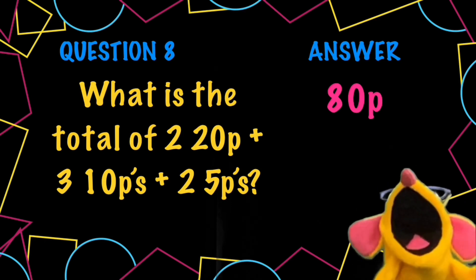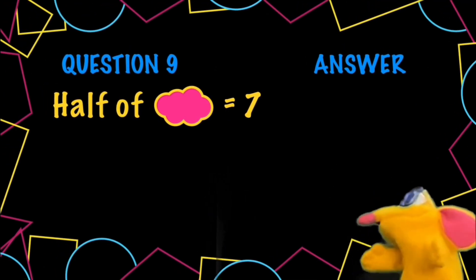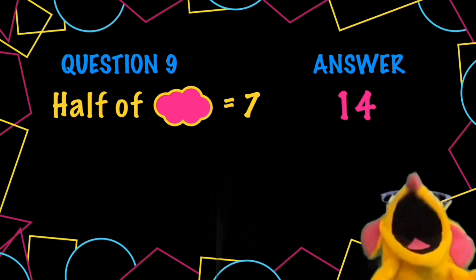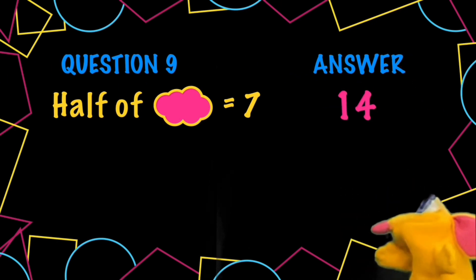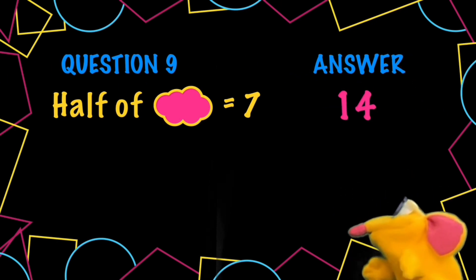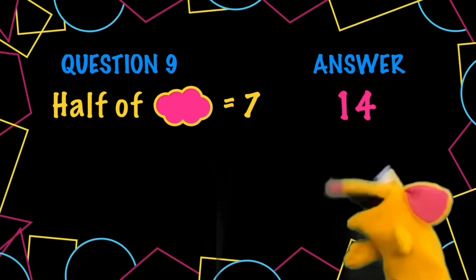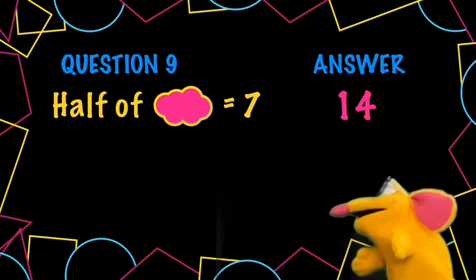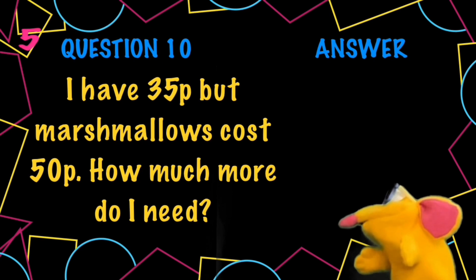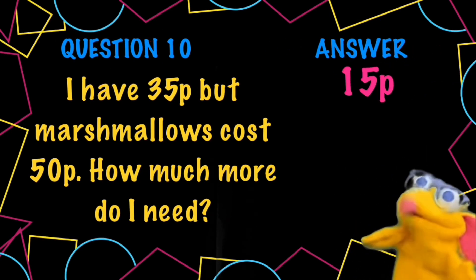Hope you included the pence. Half of something equals 7 — half of 14, because double 7 is 14. And the last question, question 10: I need 15 pence more. Good job I've got plenty of marshmallows already.